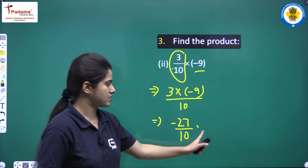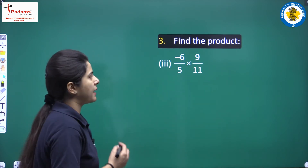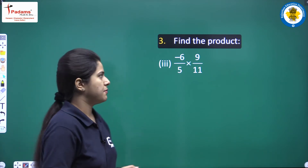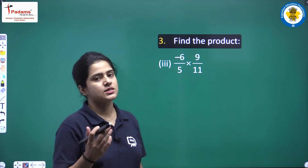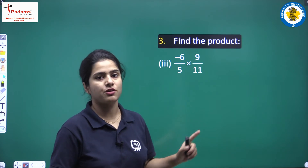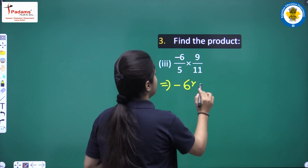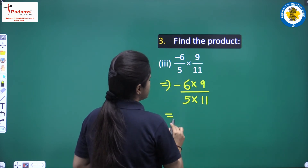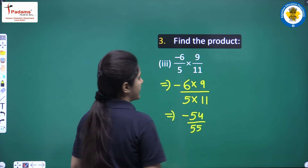Looking at the next question: minus 6 upon 5 into 9 upon 11. Basically, you have two rational numbers to multiply. Product of numerators upon product of denominators. So, this is minus 6 into 9 upon 5 into 11. This is minus 54 upon 55 and this is the product.